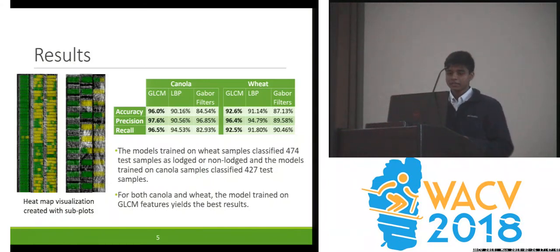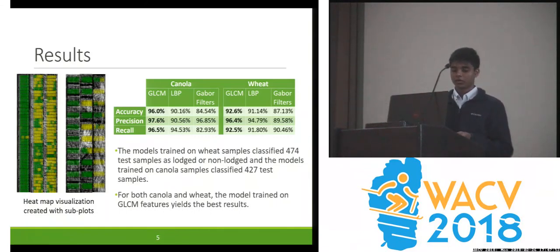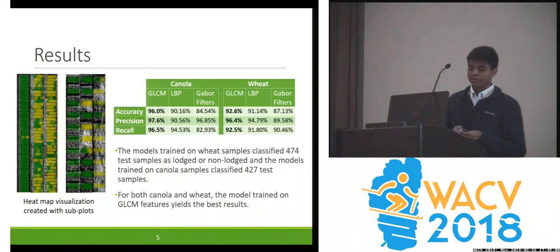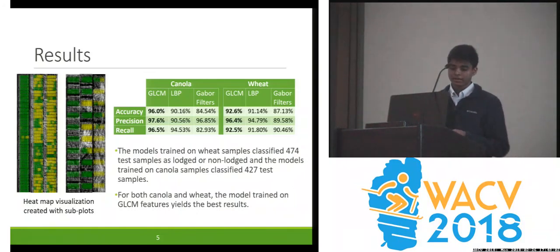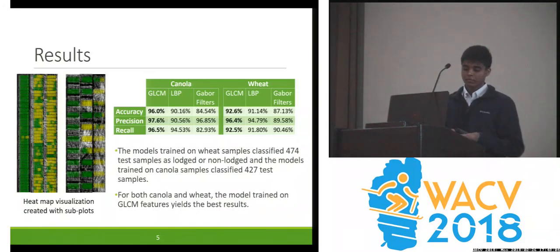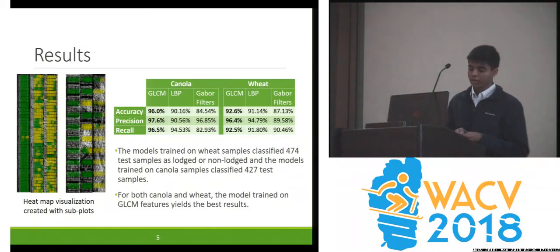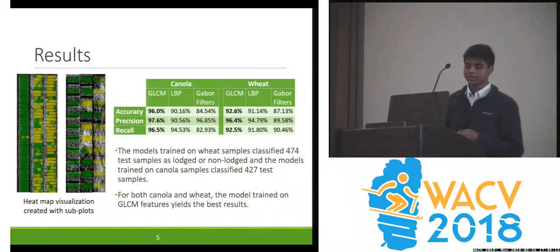Using the classification of these subplots, we were able to create a heat map with a visualization of the whole field, which allowed plant scientists to see patterns in the field and hopefully pick the correct varieties of the crop to breed the next lodging-resistant varieties of wheat and canola. Thank you very much.